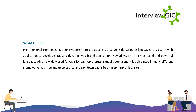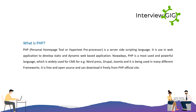PHP is a server-side scripting language. It is used in web applications to develop static and dynamic web-based applications. Nowadays, PHP is the most used and powerful language, which is widely used for CMS — for example, WordPress, Drupal, Joomla — and is used in many different frameworks. It is free and open source and can be downloaded freely from the PHP official site.